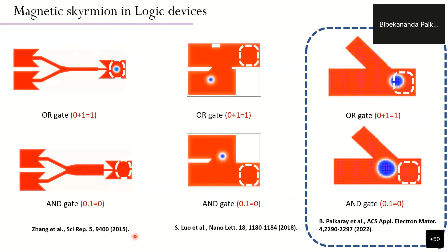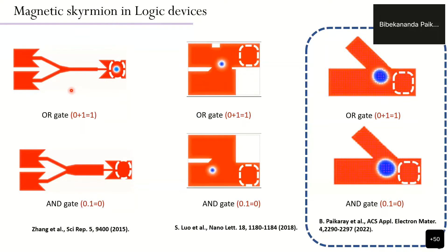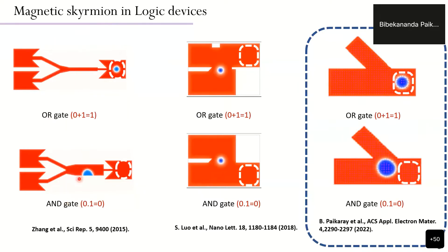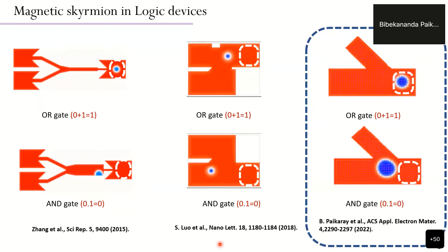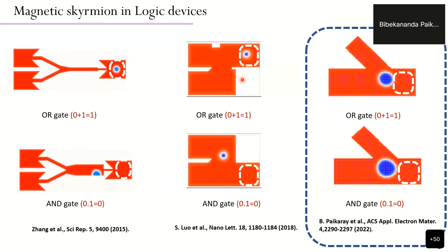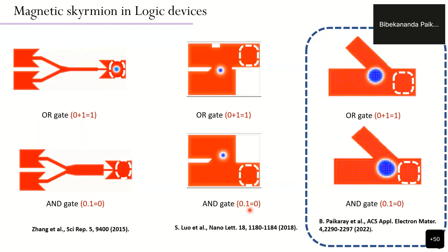Regarding prior work on skyrmion-based logic devices: in 2015, the Zhang group demonstrated a skyrmion-based logic device using a Y-type racetrack, designing two different nanostructures for OR and AND logic operations with different nanotrack widths. In 2018, the Leo group designed two different architectures in an X-type nanotrack, proposing notches to provide edge repulsion for AND logic, and a design without notches for OR logic operation.